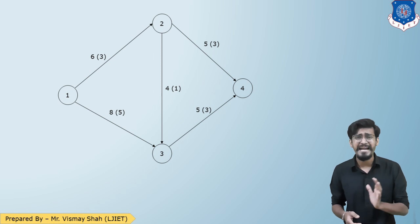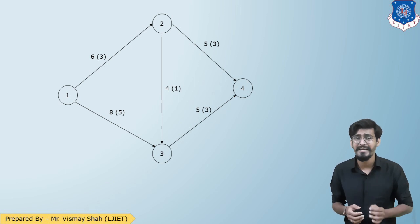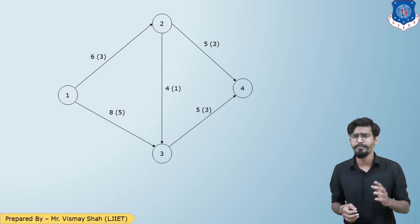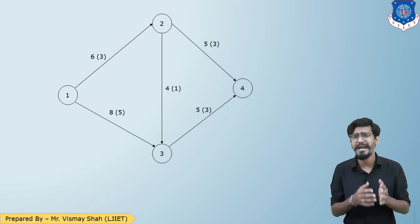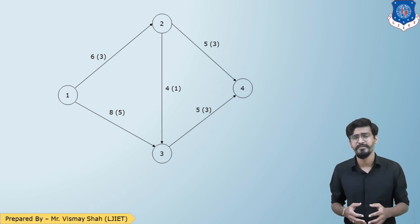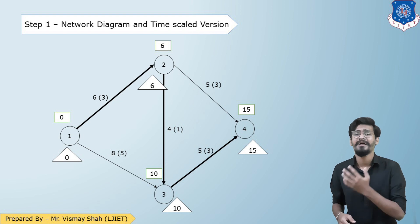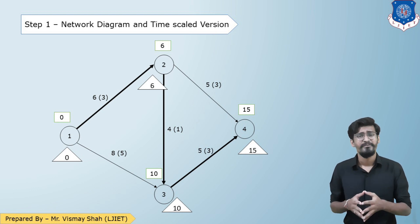The network is also provided. The very first step is to draw the network diagram with forward-backward analysis to determine the total project duration. I have done the forward-backward analysis, highlighted the critical path, and as you can see, the total duration for the network is 15 weeks.